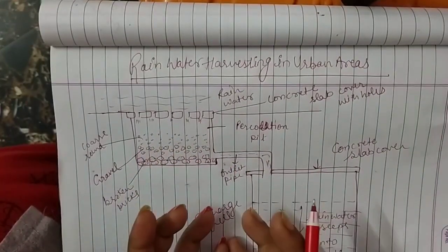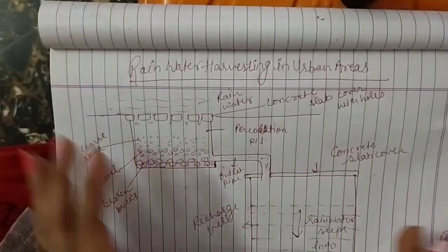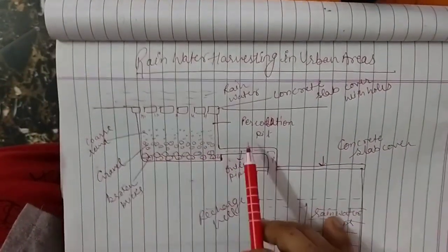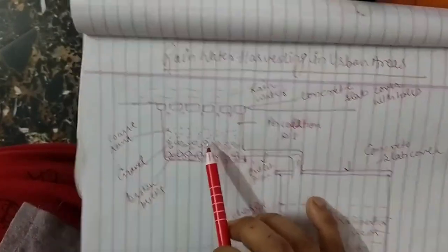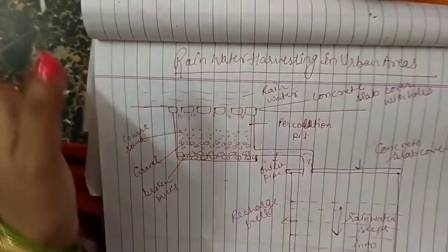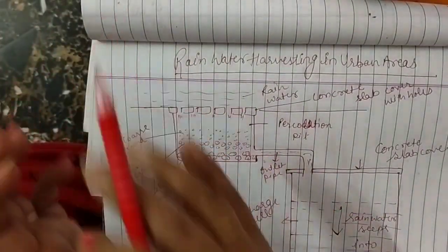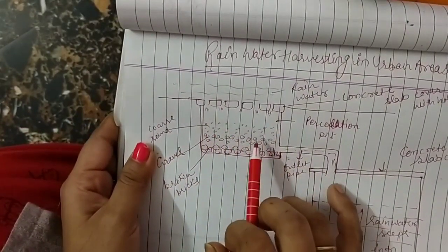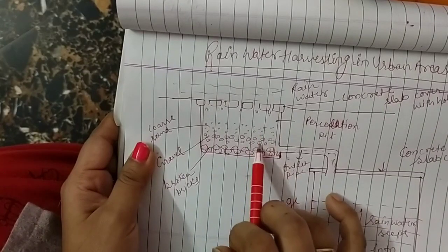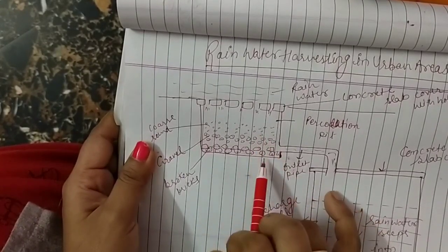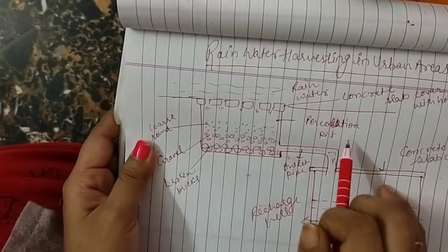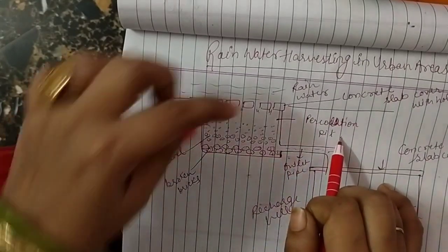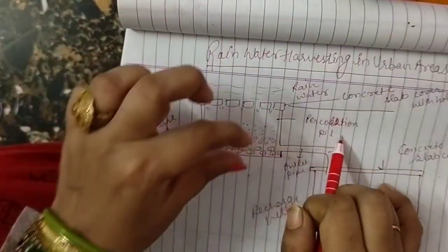In urban areas where you have developed systems and concrete slabs, they develop percolation pits with three layers. They are called percolation pits because as the water goes through, it will be filtered through the layers.